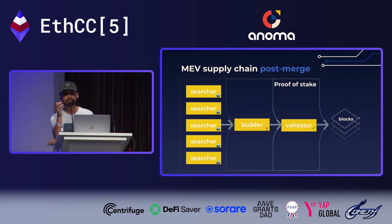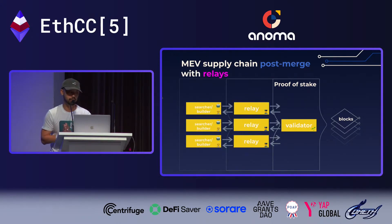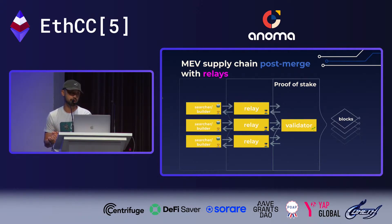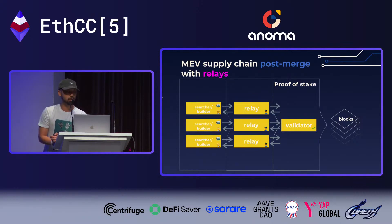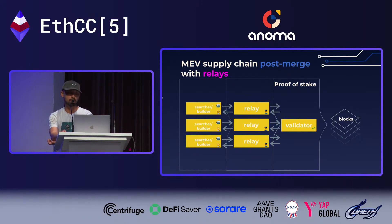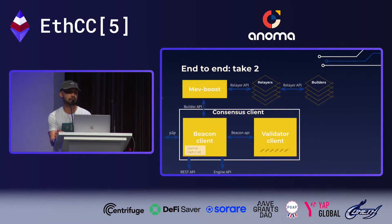So how do we ensure that the searcher, the builder, and the validator trust each other? Here's a new actor — we introduce the Relayer. The Relayer essentially governs trust before full PBS. What does the Relayer do? It makes sure the searchers, builder, and validator don't screw each other over. It ensures the block the builder built is valid, that it pays the correct amount to the validator. It's a data availability service. Ideally you want more than one relay layer, because redundancy is important, and you also want censorship resistance.